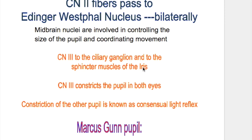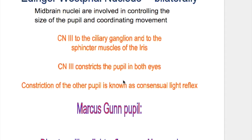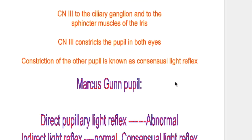The muscles of the iris are of two types: constrictor and dilator. The constrictor or sphincter is supplied by the oculomotor nerve, and the dilators are supplied by the cervical sympathetic nerve. The oculomotor nerve constricts the pupil in both eyes, and constriction of the other pupil is known as the consensual light reflex.